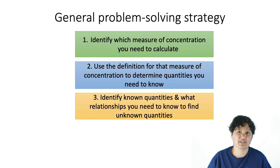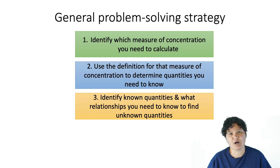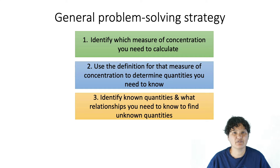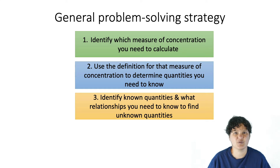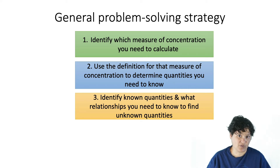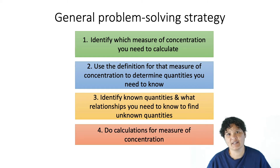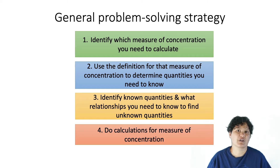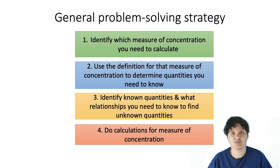The third step is the most vague, and this is the one that's really going to vary from problem to problem. Essentially, you're going to make a plan for figuring out how to find the quantities you defined in step two using the information that you have. Finally, once you have those quantities, you can go ahead and plug them into the definition for the concentration unit you were looking for to get your final answer.